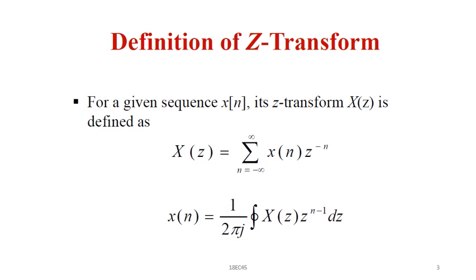The inverse Z-transform is given by X(N) equal to 1 by 2 pi J times the closed integral of X(Z) Z to the power N minus 1 into dZ. These equations will be used to obtain the Z-transform and the inverse Z-transform.